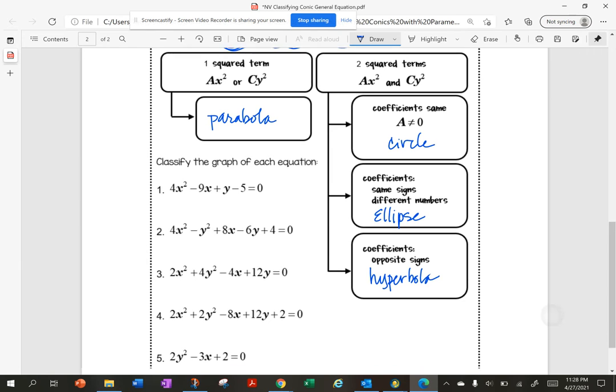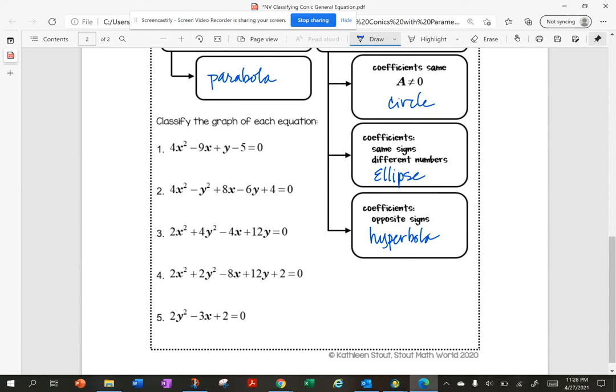So let's classify each of these. I'm looking at the squared terms. At this point, I only have one squared term in number one, so I have a parabola.